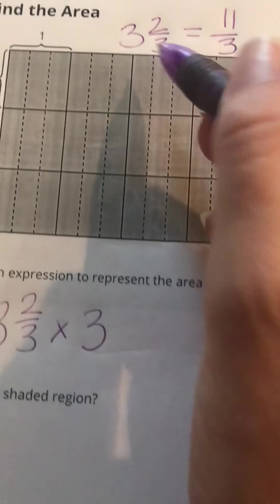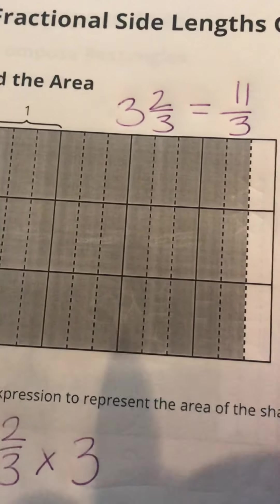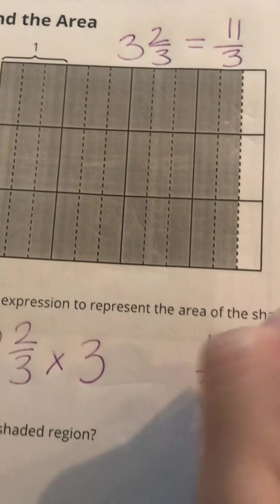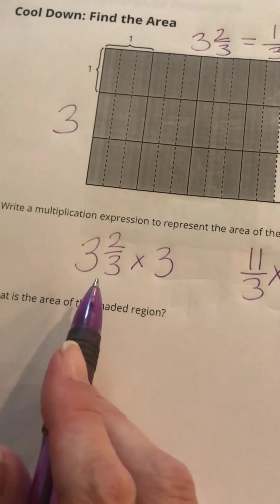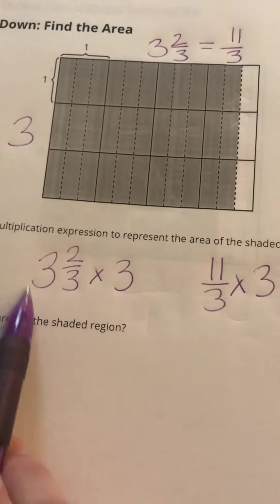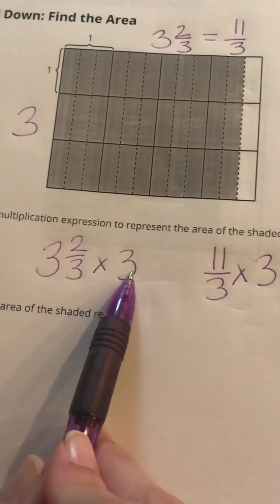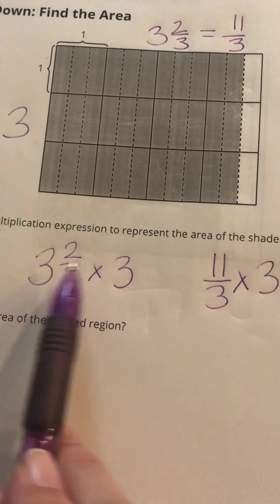And so 11/3 would be another way to write 3 and 2/3. So I also could have written this as 11/3 times 3. Now when I work this out, I have to make sure that if I use this first one, that I multiply the 3 times the whole number and the 3 times the fraction.